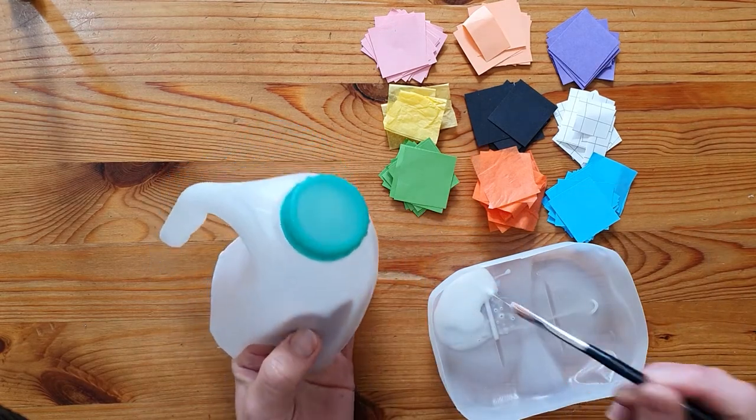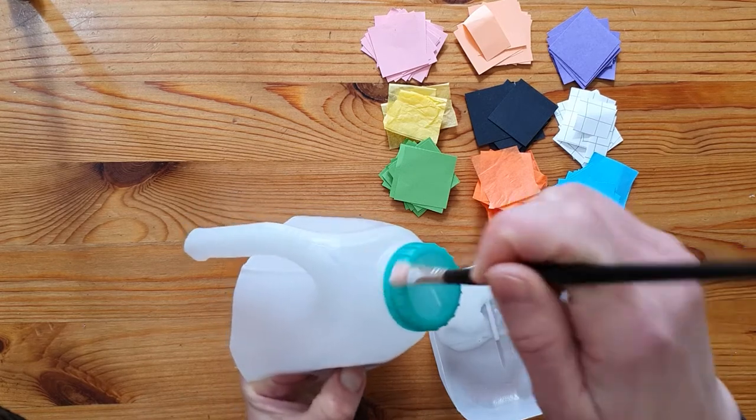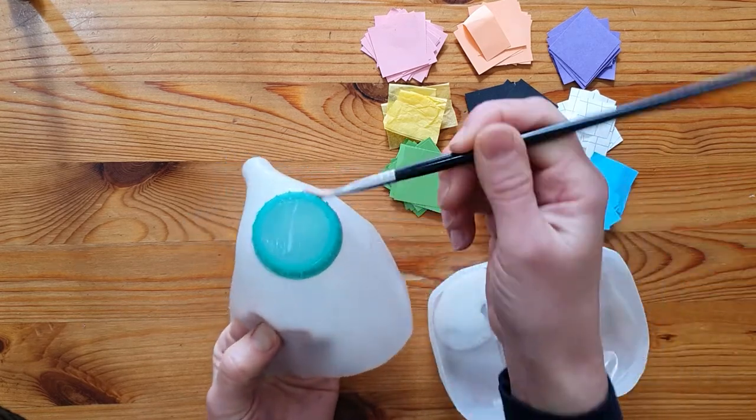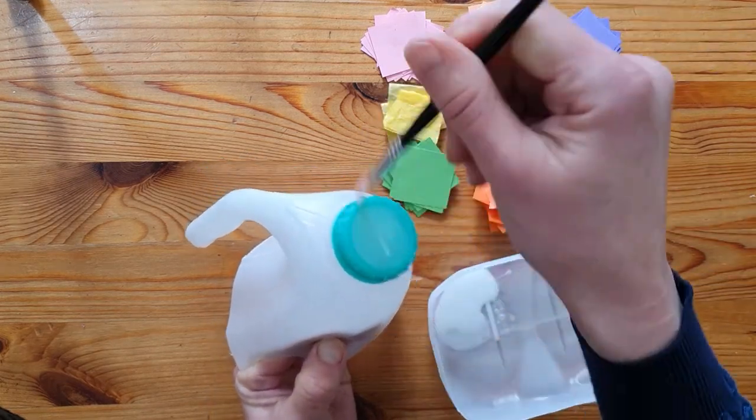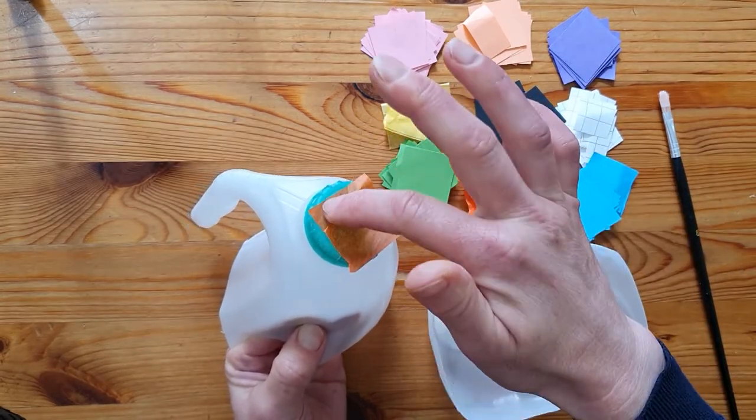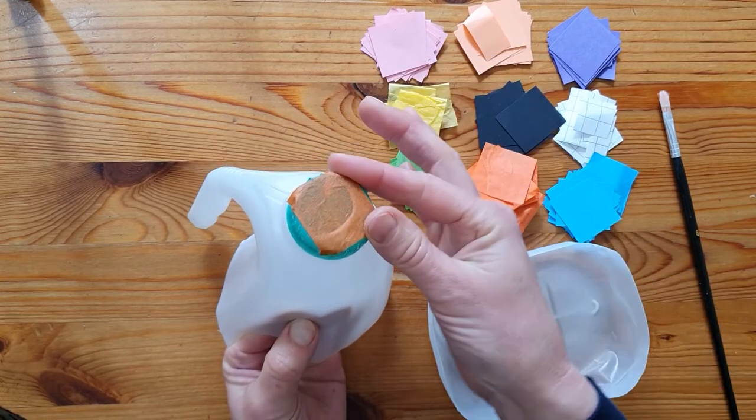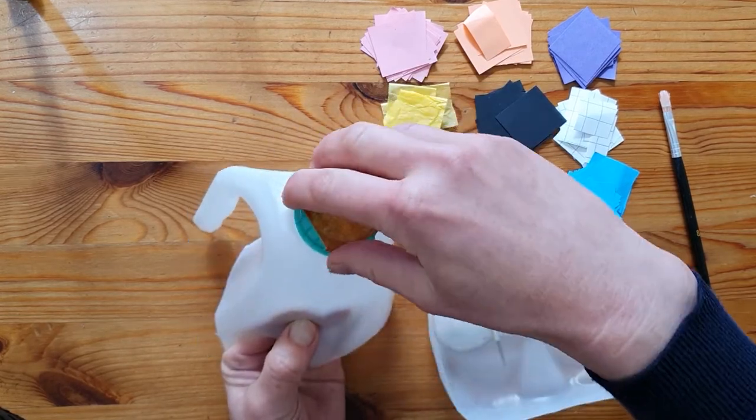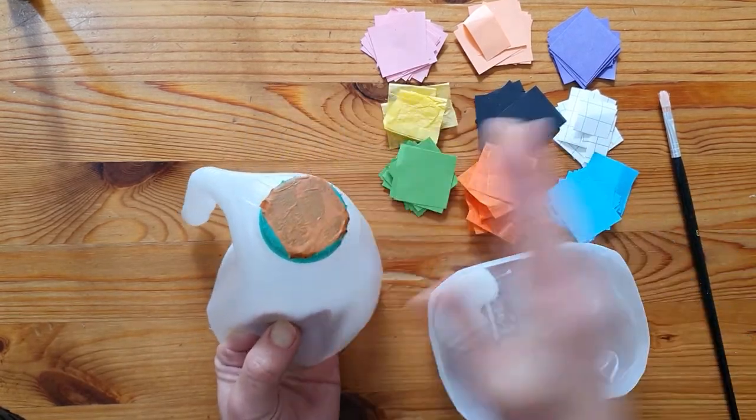Glue the part of the bottle you want to start with and stick on your first piece. You may need to glue the paper too. Tissue paper will need two or three layers to get a solid color.